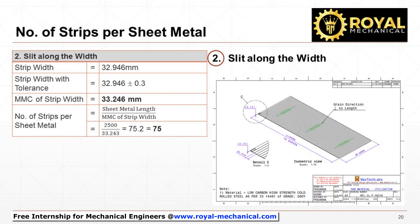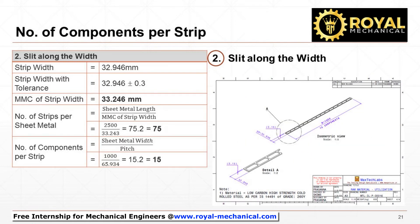Divide the sheet metal's length by the MMC of the strip width to calculate the number of strips produced from the sheet metal. We will get 75.2 strips. Practically, 0.2 strip is of no use; hence we can utilize only 75 strips. Divide the width of the sheet metal by the pitch to calculate the number of components that can be produced per strip. We will get 15.2 components. Practically, 0.2 component is of no use; hence we can utilize only 15 components per strip.